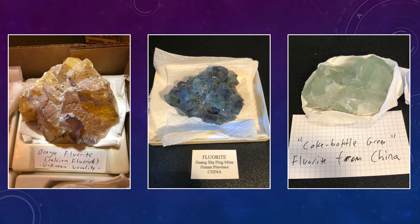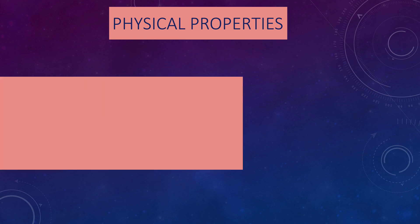This is all fluorite. You can see it has a similar type of shape — kind of boxy or cubic. We have an orange fluorite, a weird green fluorite in the middle, and what's called cocoa bottle green fluorite on the right. Fluorite can occur in any color in the rainbow: blues, purples, and even clear or colorless. So you can't use color alone to identify fluorite or other minerals.